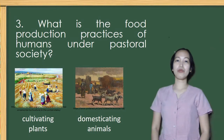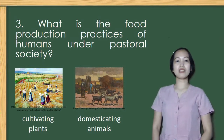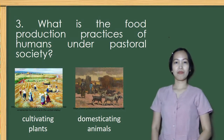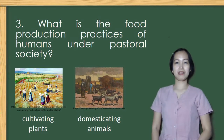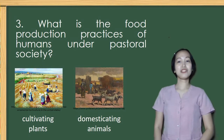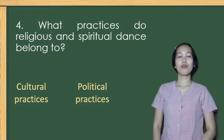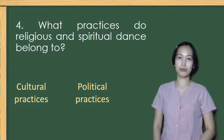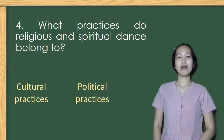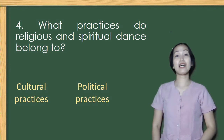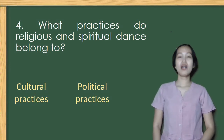Number 3: What is the food production practice of humans under pastoral society — cultivating plants or domesticating animals? The correct answer is domesticating animals. Number 4: What practices do religious and spiritual dance belong to — cultural practices or political practices? If you answered cultural practices, you are right.